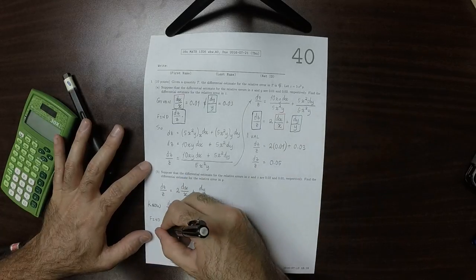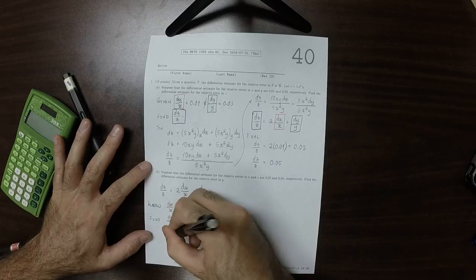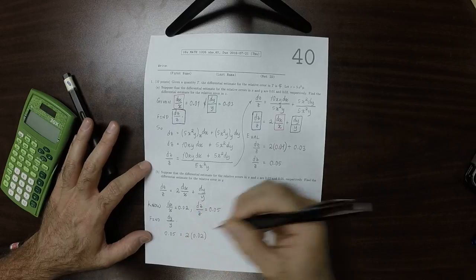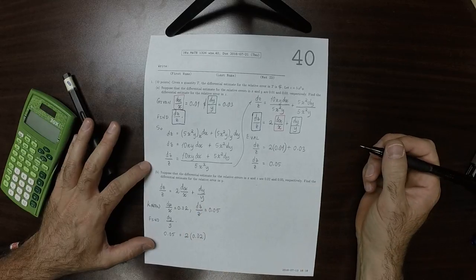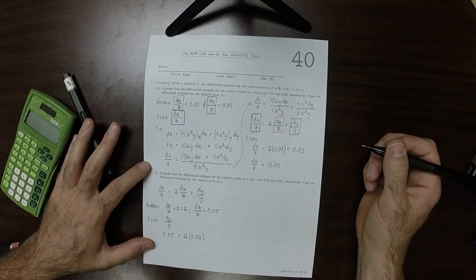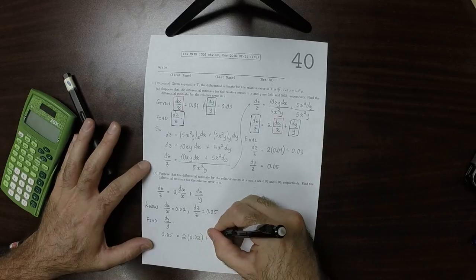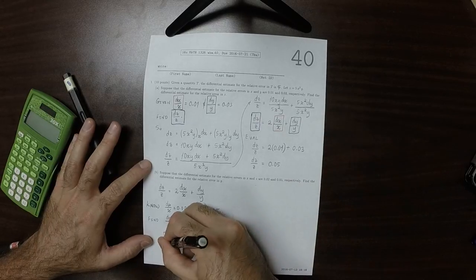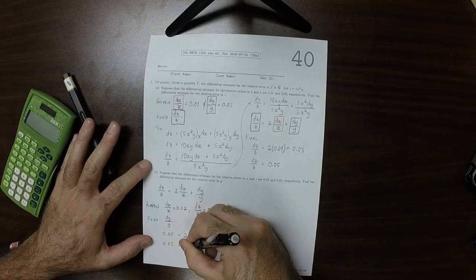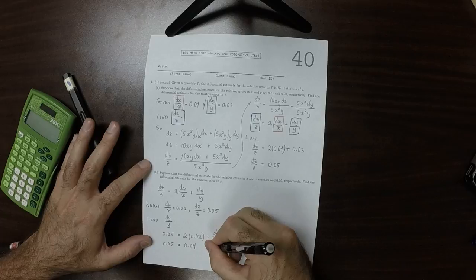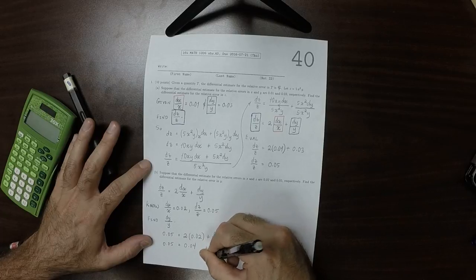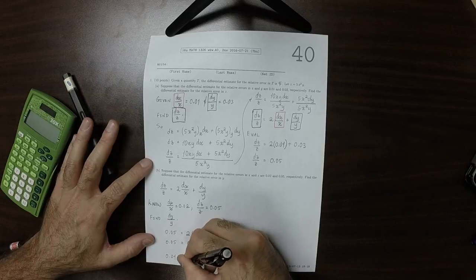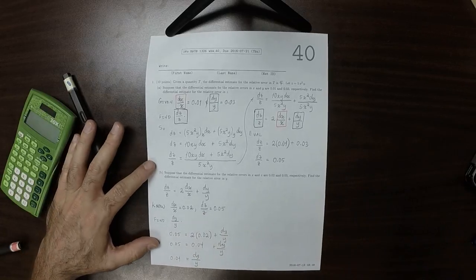So plugging in, that's 0.05 is 2 multiplied by 0.02 plus dy over y. So that's 0.05 is 0.04 plus dy over y. So 0.01 is dy over y, and that's the answer.